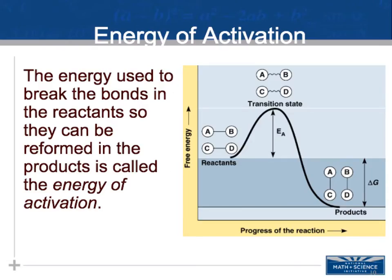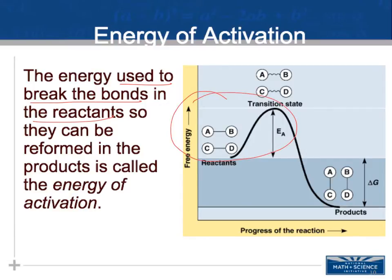The energy of activation is the energy used to break the bonds in the reactants so they can be reformed — it's what gets the chemical reaction going. On the graph, you can see that it required an input of free energy to break the bonds between molecules A, B, C, and D so they can be reformed into different products. That amount of free energy is our activation energy, which our enzymes help to lower.